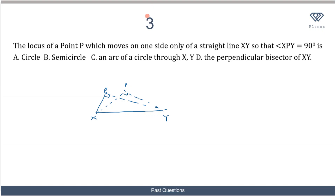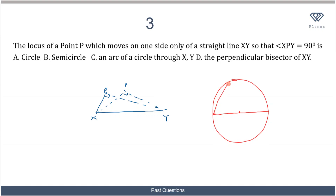To answer this correctly you need to know circle theorem. One theorem states: if a line passes through the center of a circle as a diameter, and you draw lines from each end of the diameter to any point on the circumference, the angle at that point on the circumference is always 90 degrees. So any point P where angle XPY equals 90 degrees lies on a circle with XY as diameter.